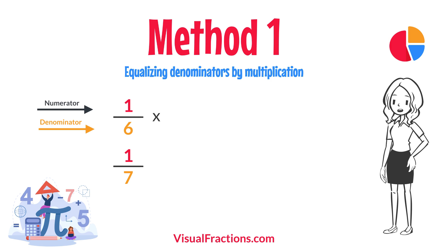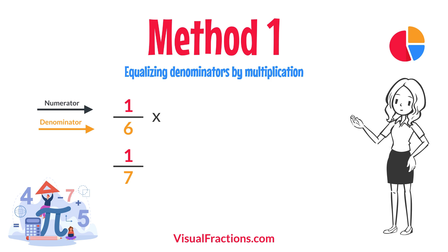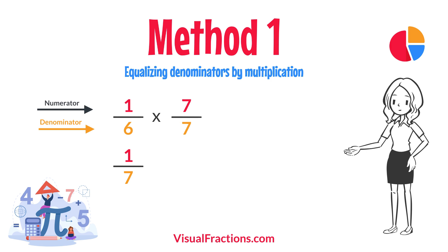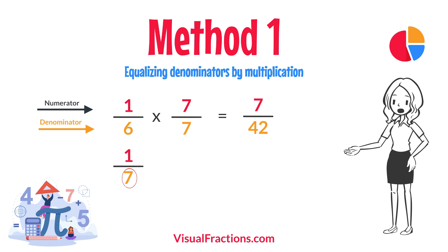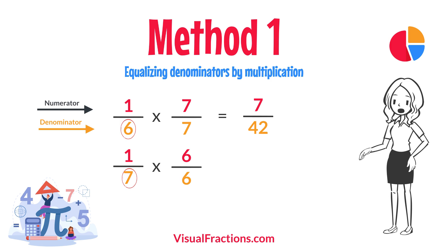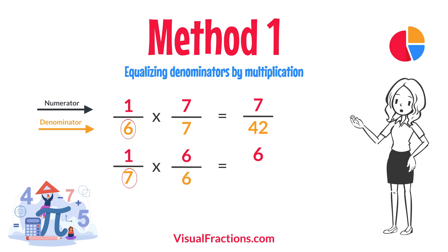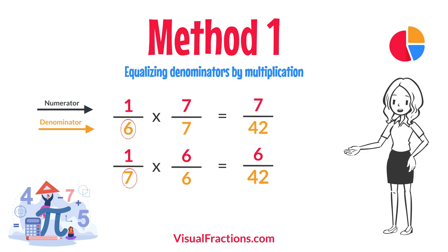For 1/6, multiply both the numerator and the denominator by 7 — the denominator of 1/7. This gives us 7/42. For 1/7, multiply both the numerator and the denominator by 6 — the denominator of 1/6. This results in 6/42.